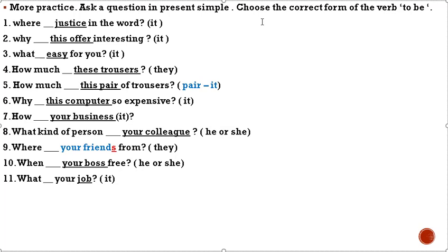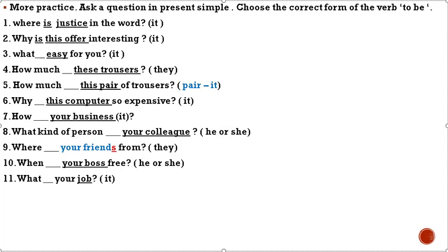More practice — ask a question in present simple, choose the correct form of the verb 'to be'. 'What ___ justice in the world?' — 'justice' is 'it', we use 'is': 'Where is justice in the world?' 'Why ___ this offer interesting?' — 'this offer' is 'it', we use 'is'. 'What ___ easy for you?' — 'it', we use 'is'. 'How much ___ this trouser?' — 'trousers' is 'they', we use 'are'.